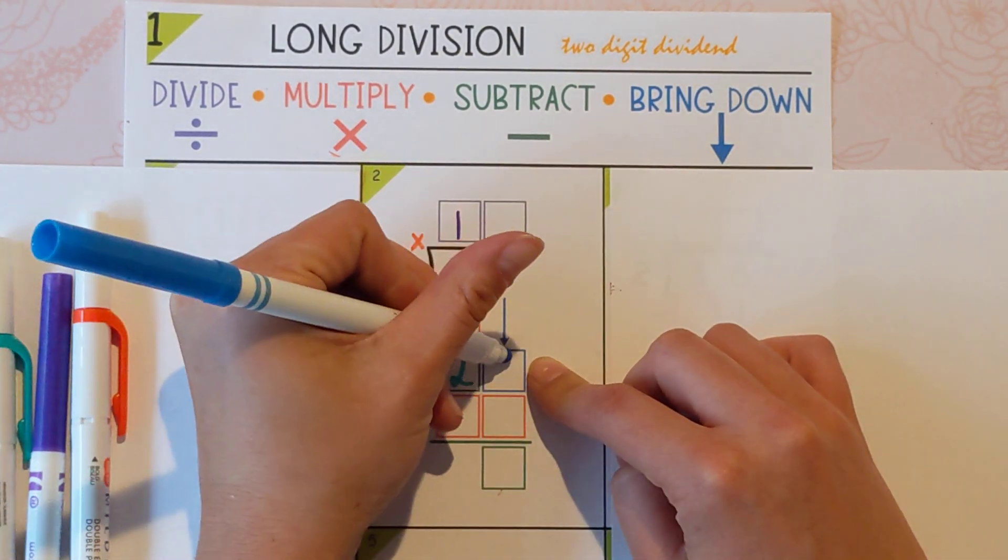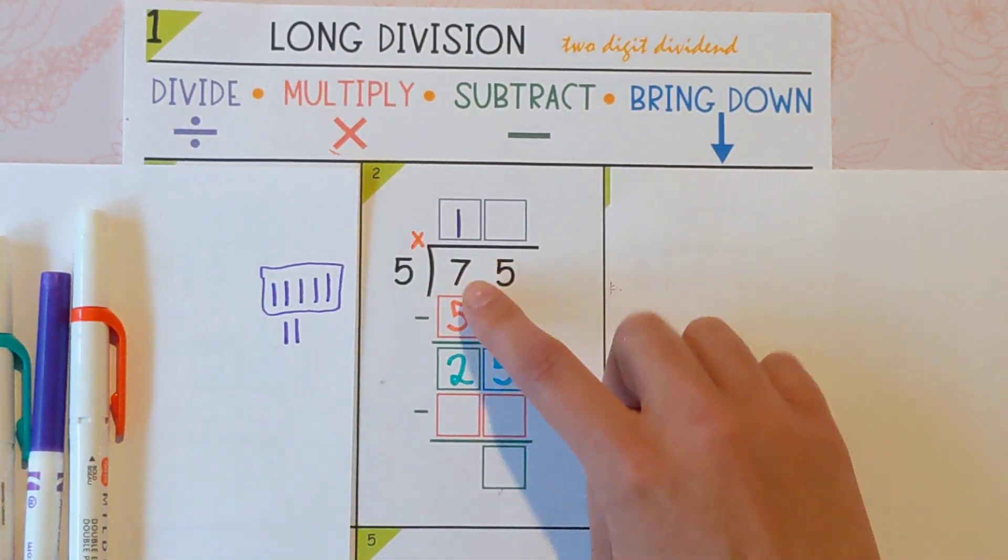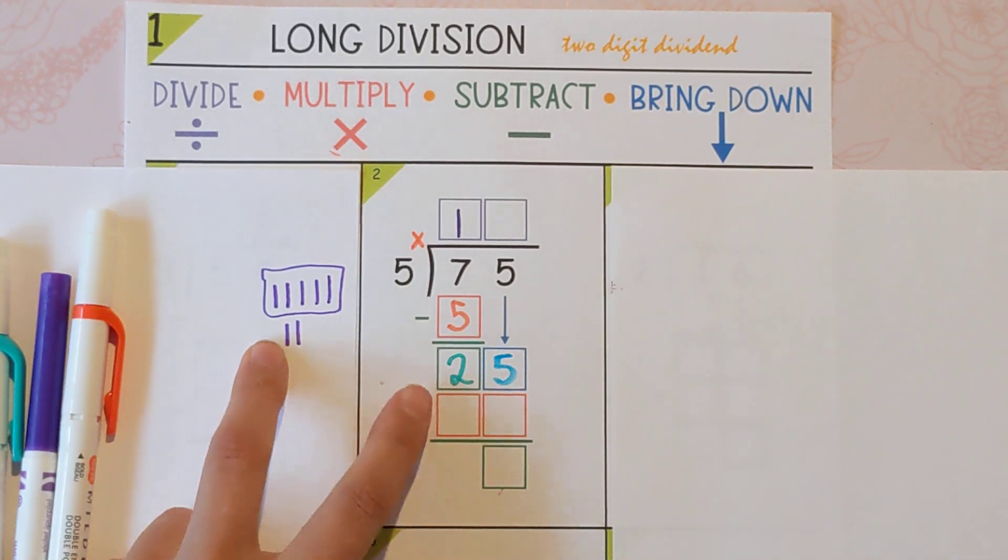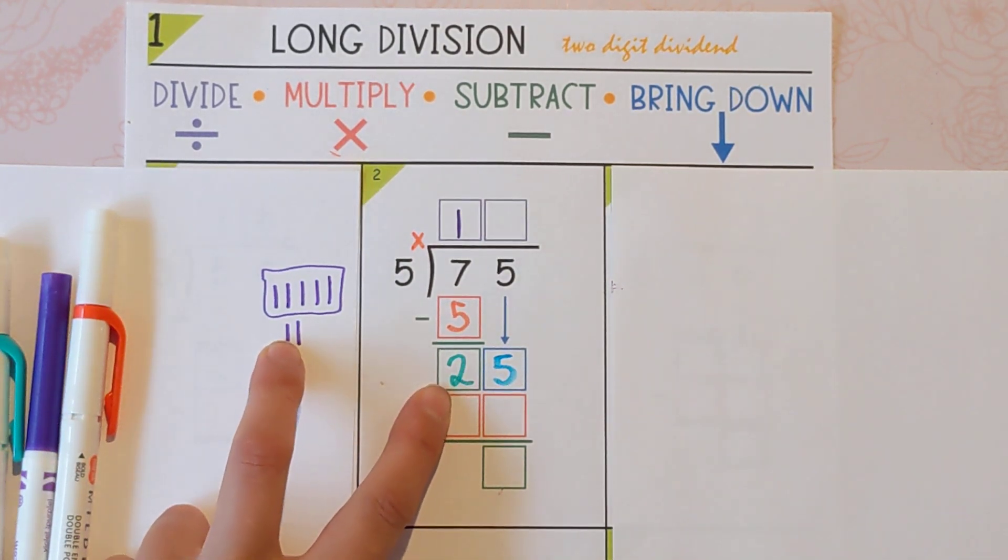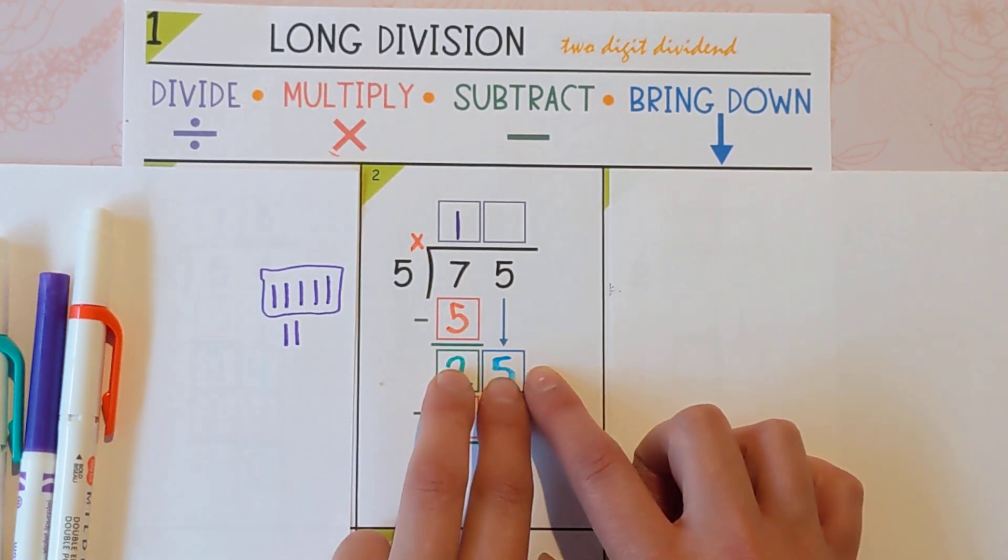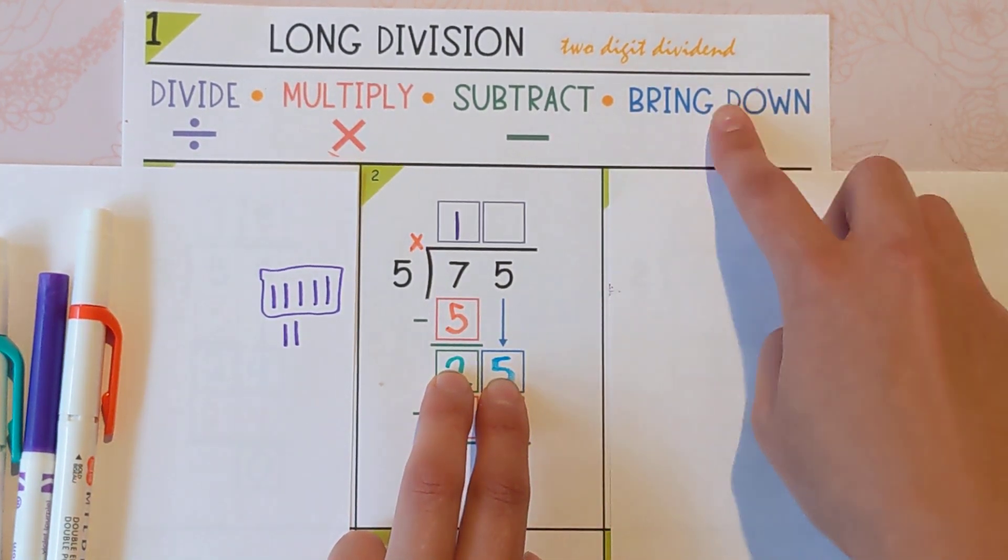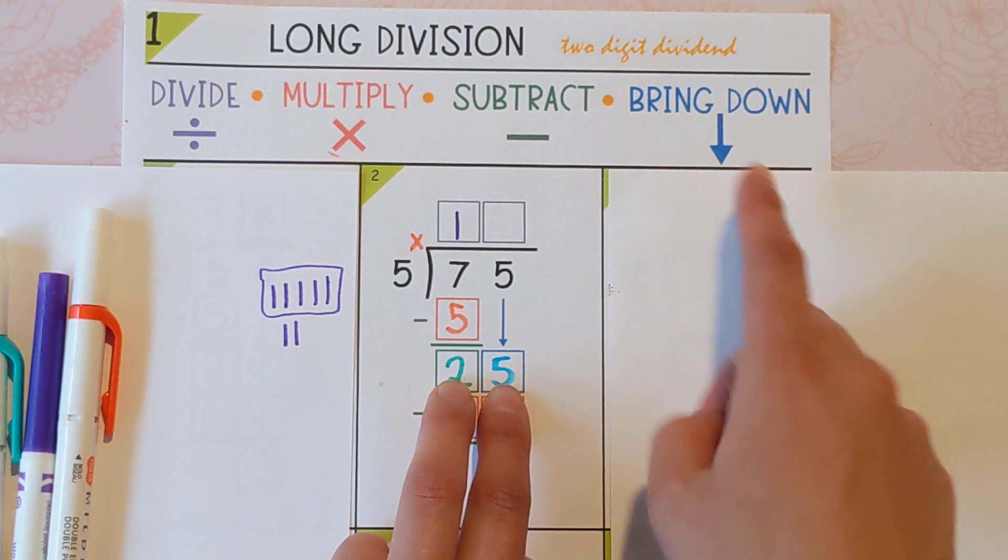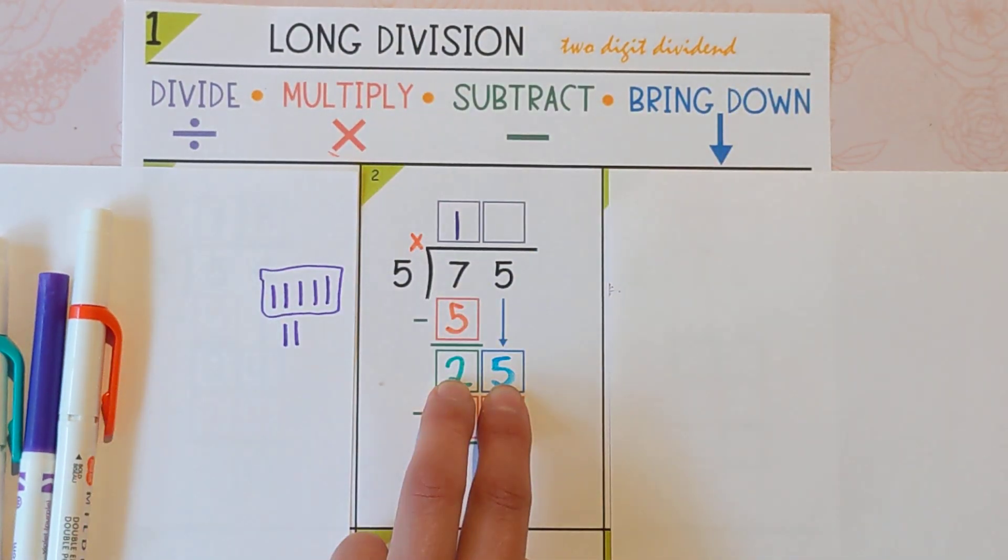And now we're going to do it all again. So we pretty much used as much of the 7 as we could. There were 2 left over which isn't a lot to work with, but that's why you bring down the next digit so now you can do this one. So since we got here, we brought down the 5, we're going to start back over at divide.